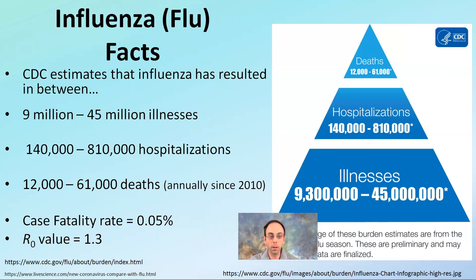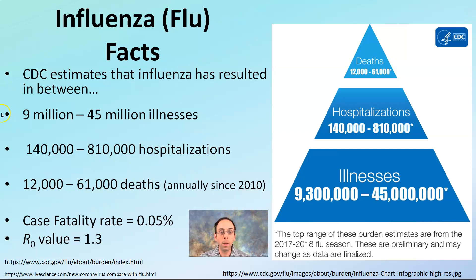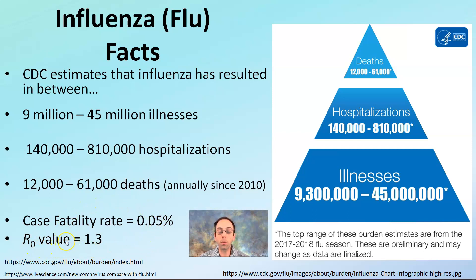Let's take the flu as an example. Looking at CDC estimates, between 9 million and 45 million illnesses occurred from the flu, 140,000 to 810,000 hospitalizations, and 12,000 to 61,000 deaths since 2010. Looking back at the last couple of years, it varies year to year. The case fatality rate is 0.05 percent — that's the percentage of people who die from influenza — and the R0 value, which we'll talk about later, is 1.3. Remember these numbers; we'll see how they compare to coronavirus.